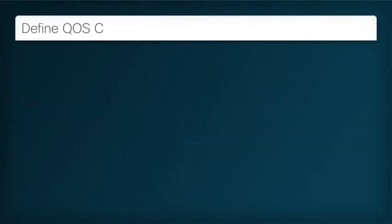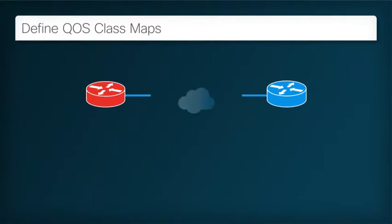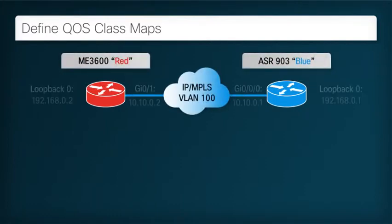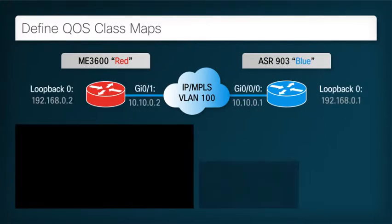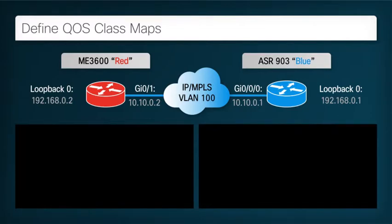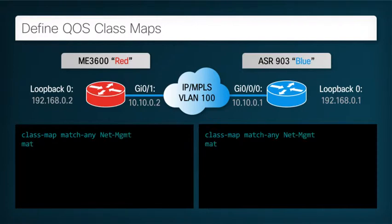Define QoS class maps. We begin by defining class maps, which select the traffic we are going to treat with a QoS policy. We select the vital network management traffic by matching packets with a DSCP value of CS7, which is the highest priority value available. We define a class map structure to achieve this with a match statement. Next is the network control traffic, which we select by matching packets with a DSCP value of CS6, the second highest priority value.